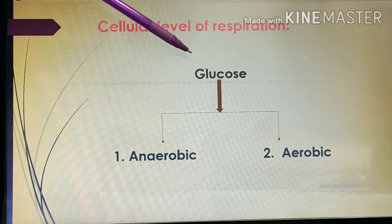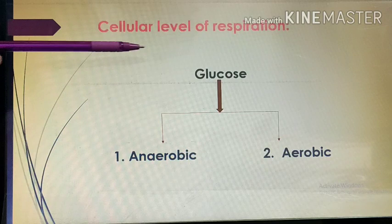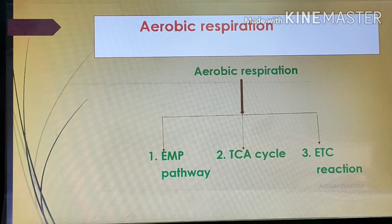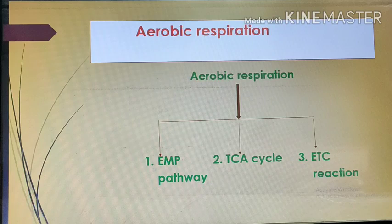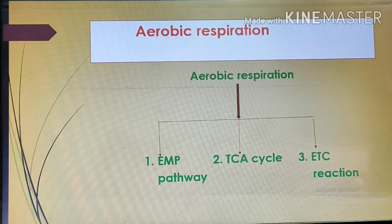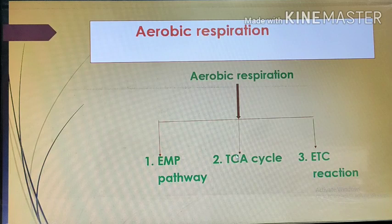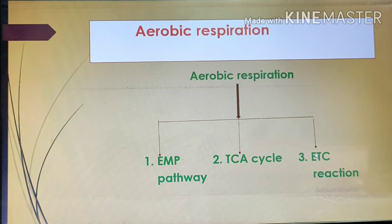Glucose is oxidized aerobically, meaning in the presence of oxygen, and anaerobically, meaning in the absence of oxygen. In aerobic respiration, glucose is oxidized step by step with the help of oxygen. The oxidation of glucose is completed in three steps: the first step is the EMP pathway, also called glycolysis; the second step is the TCA cycle, also called the Krebs cycle; and the third step is the ETC reaction, that is the electron transfer chain reaction.